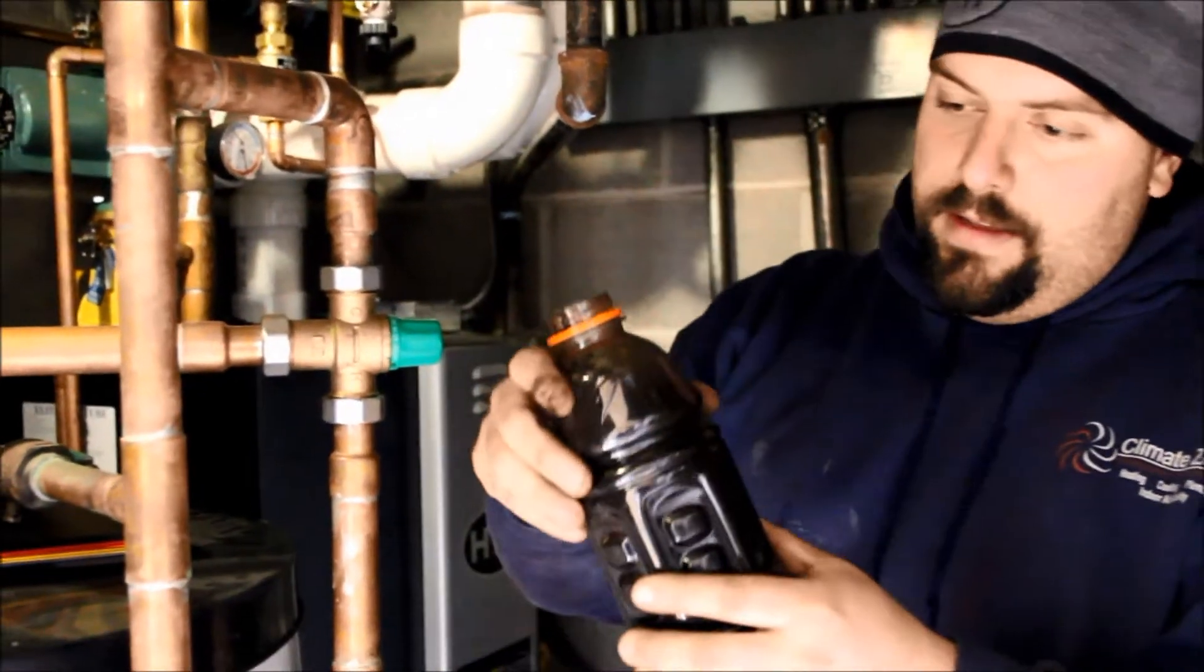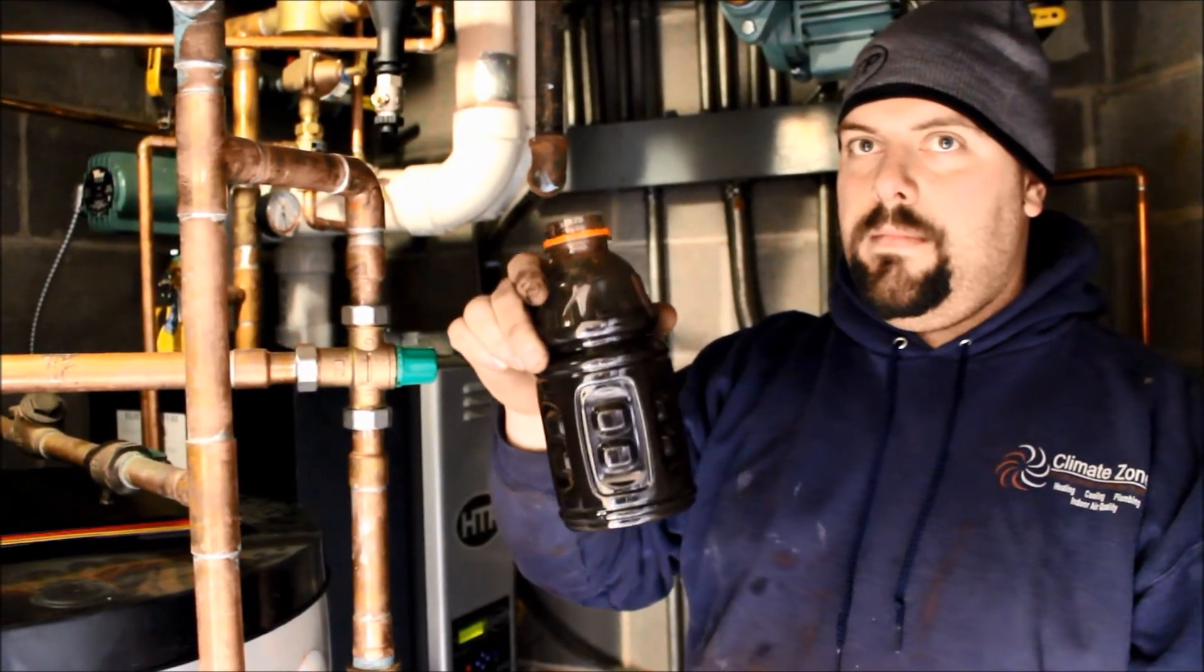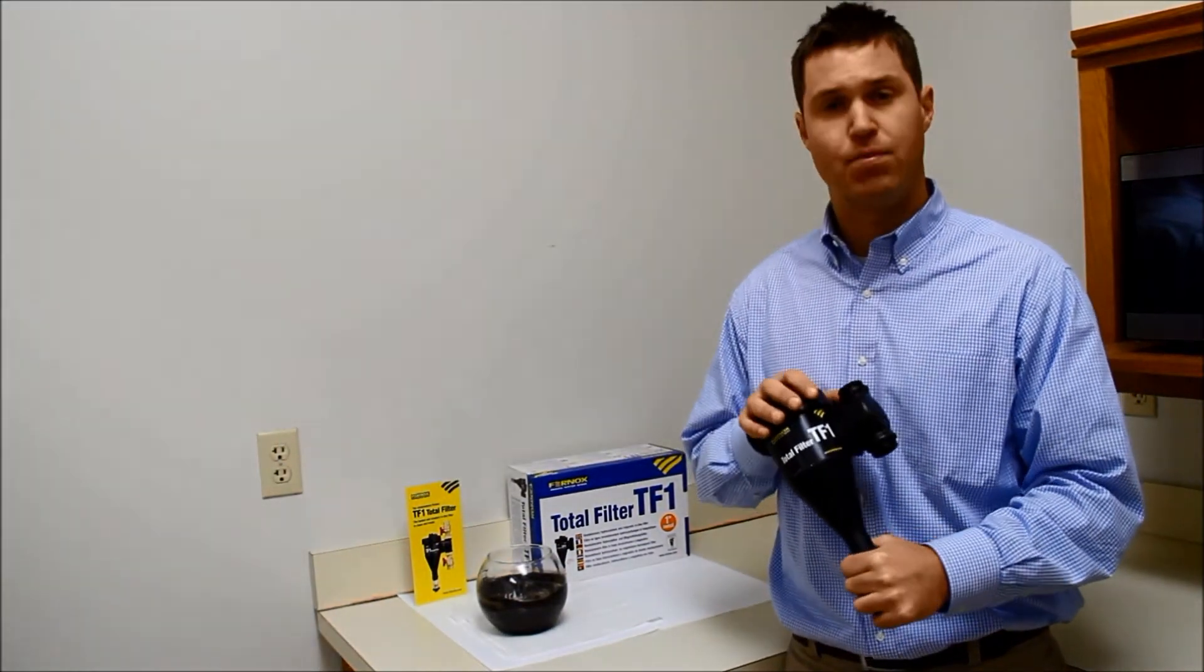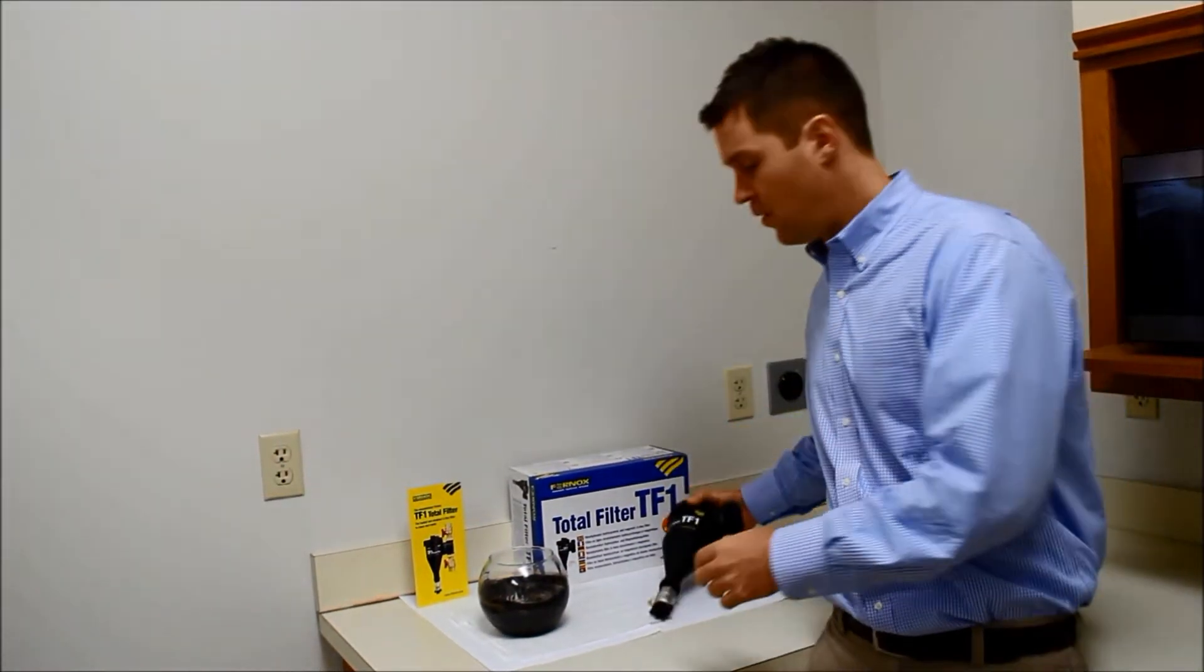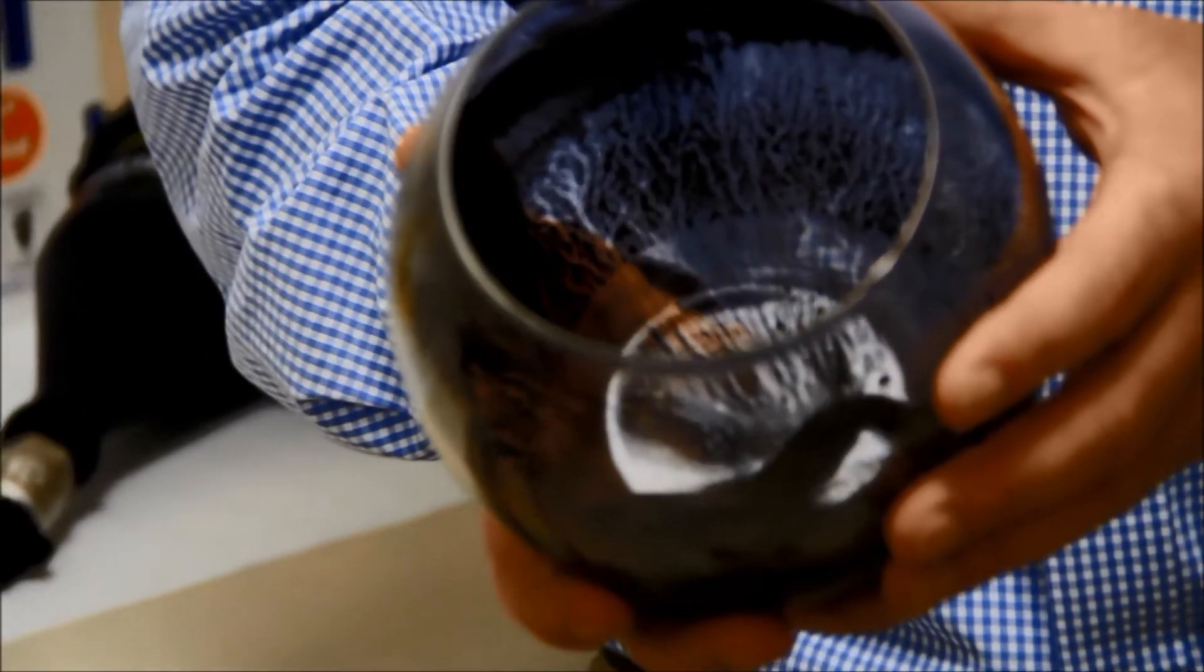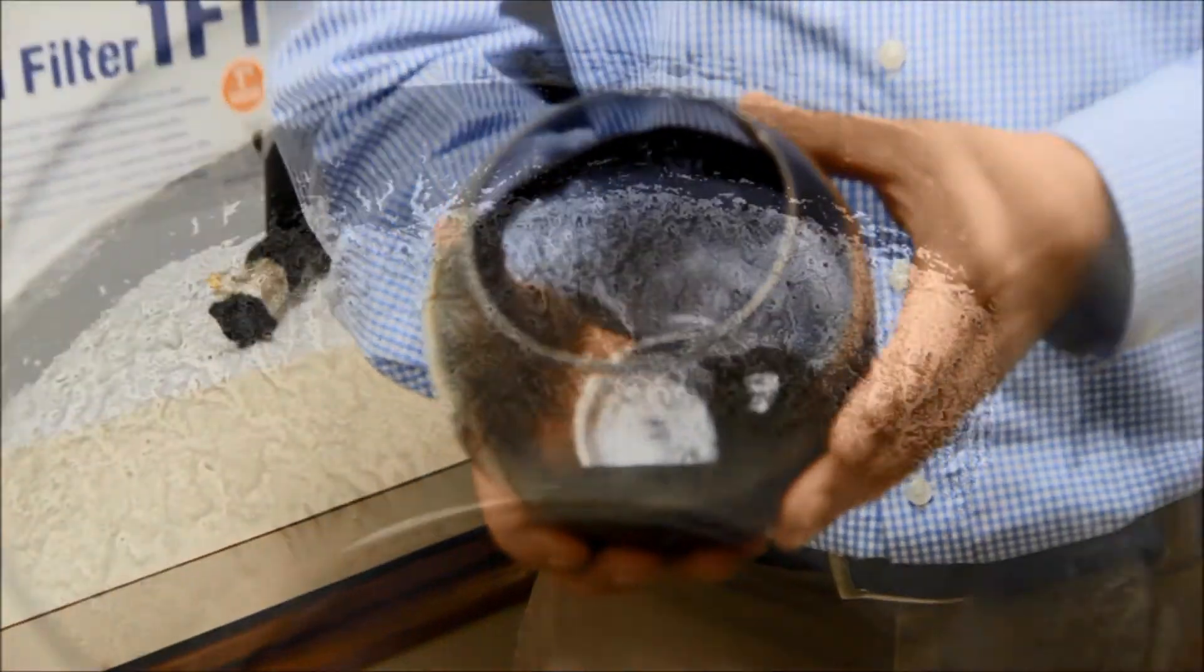And this is what we've collected. So we've just seen Bob empty the TF1 filter out at Plumlee Village and this is what we've come up with. This was just two weeks of this filter in line in the system. So as you can see there's a pretty good amount of sludge and build up that that TF1 collected over the last two weeks.